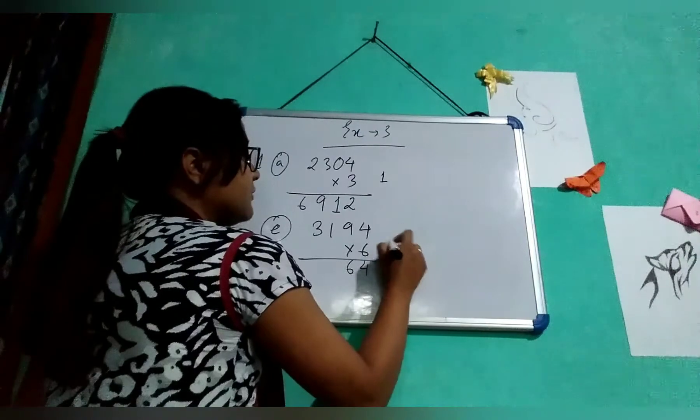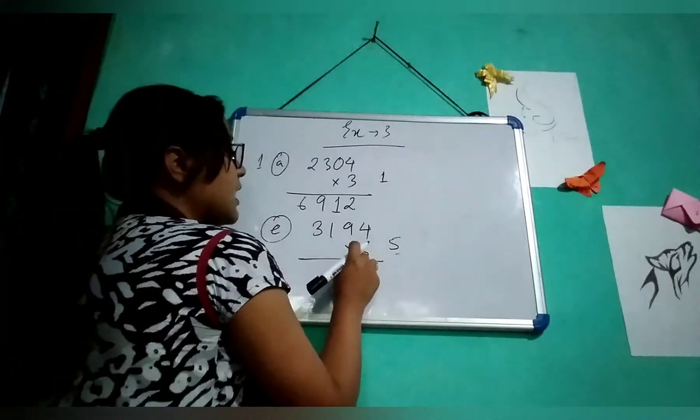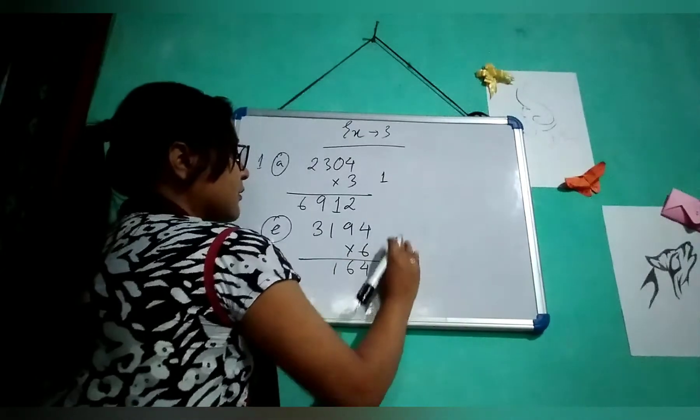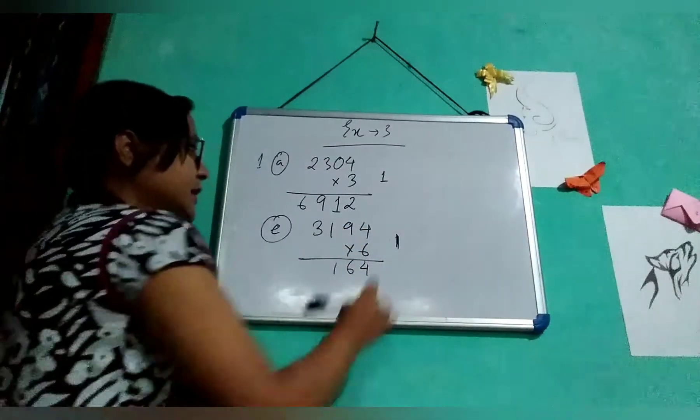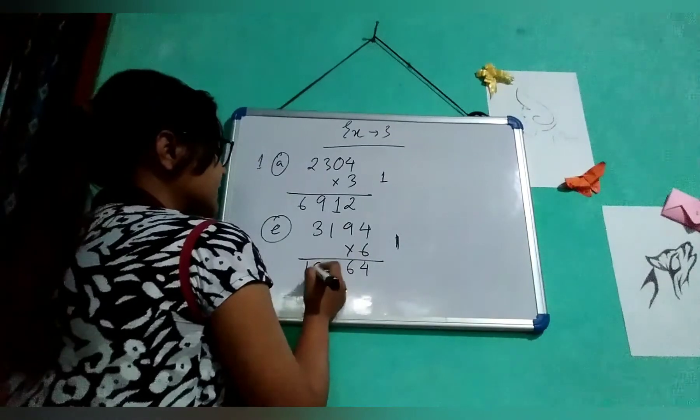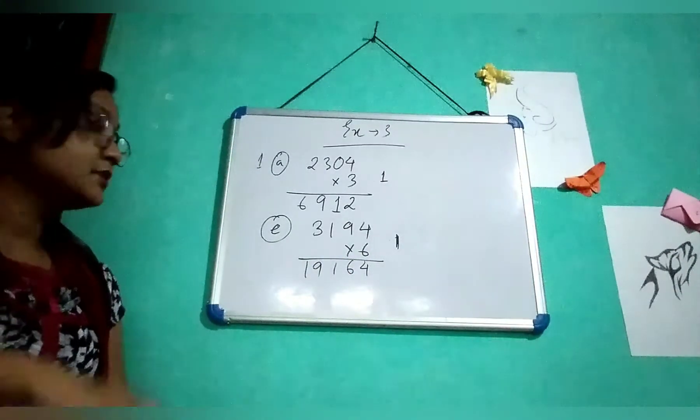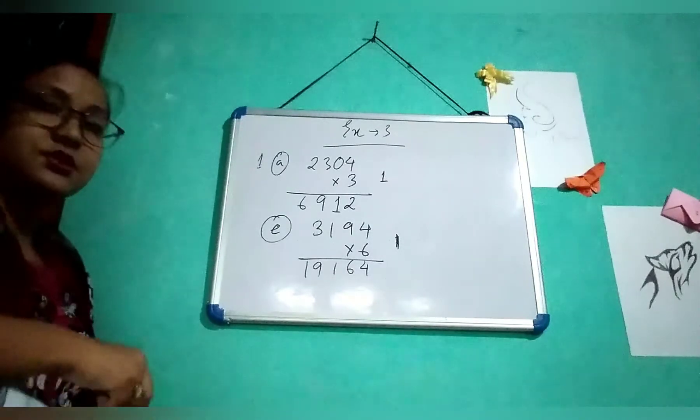1 times 6 is 6, 6 plus 5 is 11, write 1 and carry 1. 3 times 6 is 18, 18 plus 1 is 19. So it will be 19,164. This is the solution.